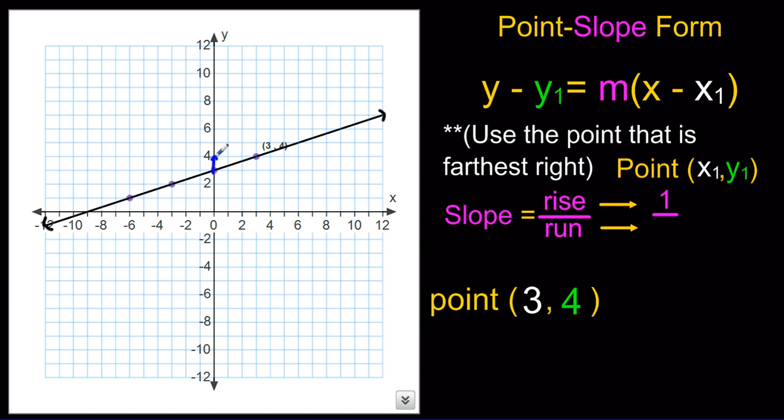And then we look at the run, and it is going over 3 units. Since it's to the right, it's a positive 3. So our slope is 1 third.